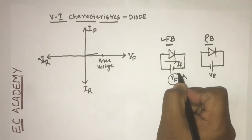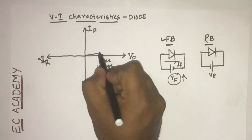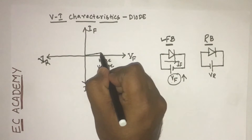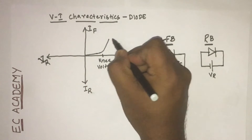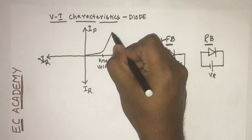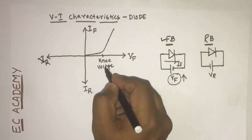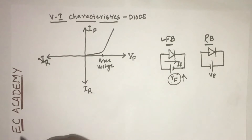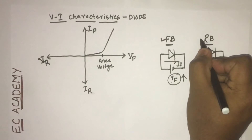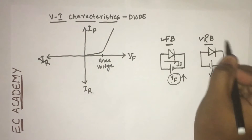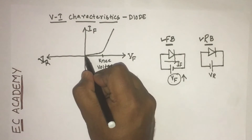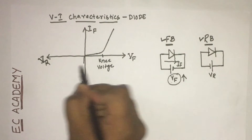Once Vf reaches knee voltage, the current increases linearly, which means the diode starts conducting electric current once Vf reaches knee voltage. When the diode is operating in reverse bias condition, there will be a small amount of reverse current flowing through the diode.